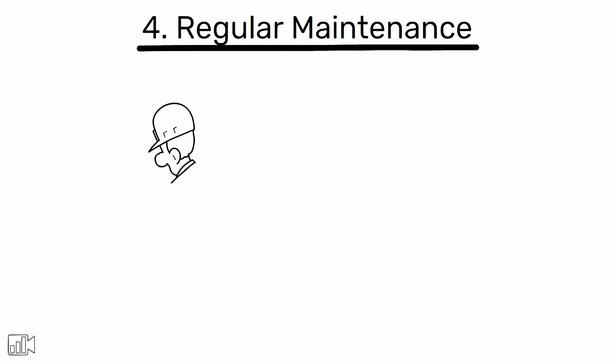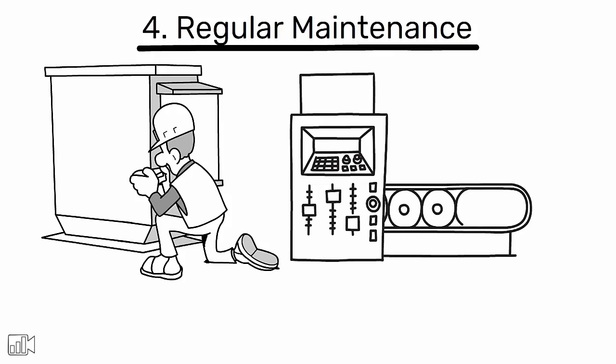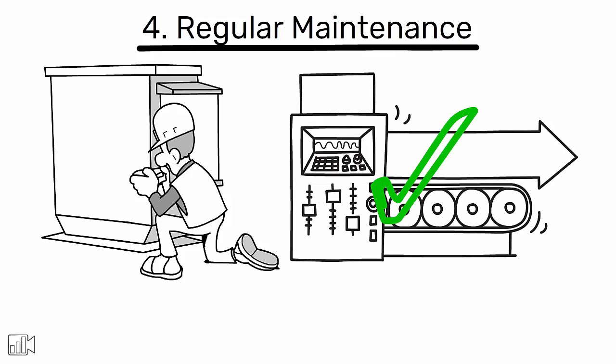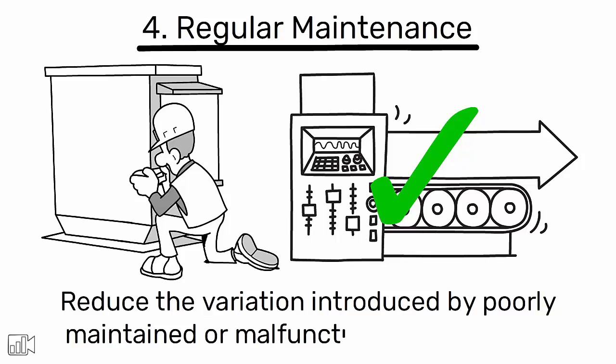4. Regular maintenance: regularly maintain and calibrate equipment to ensure it operates at its optimal level. This can reduce the variation introduced by poorly maintained or malfunctioning equipment.